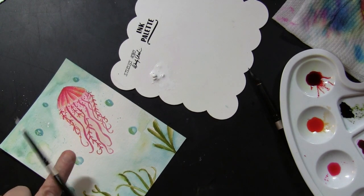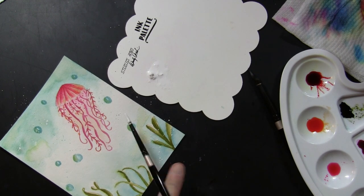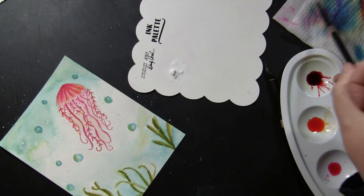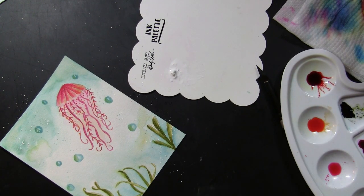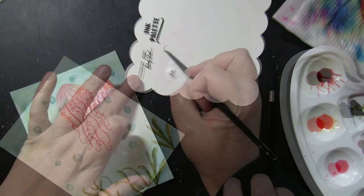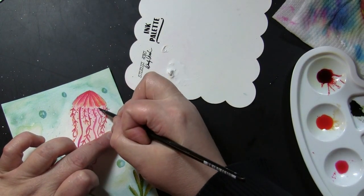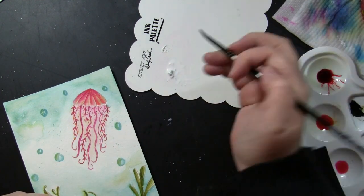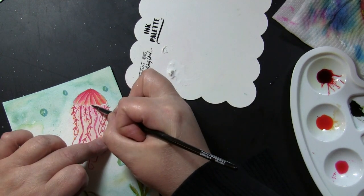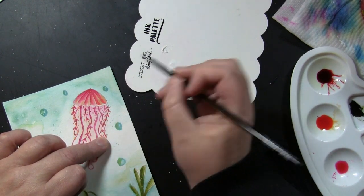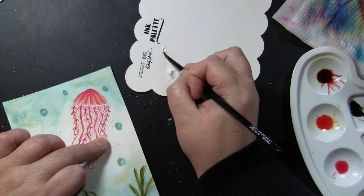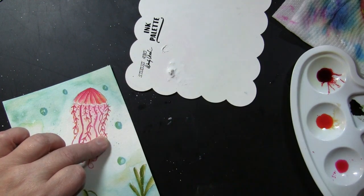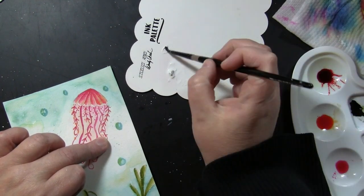I'm also going to splatter some of the white onto the background for more of that sort of bubbly movement look to the background. Now this is right out of the tube and so it's going to go on even more similar to like an acrylic. You could even use an acrylic for this part. And I wanted that to stay very opaque and very bright white so that's why I squeezed just a dab right out of the tube to use right away.